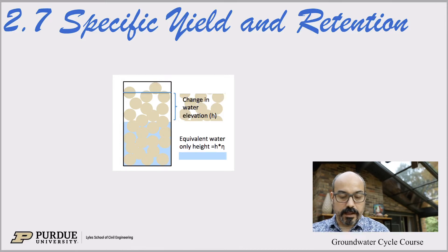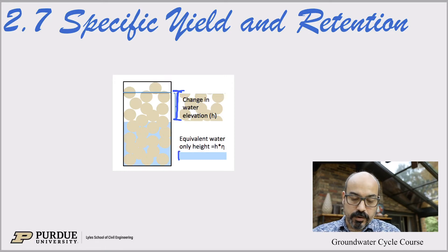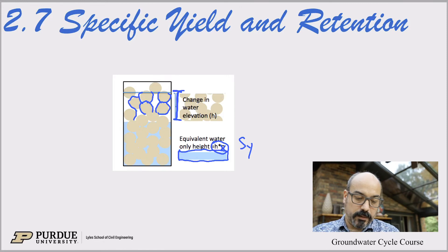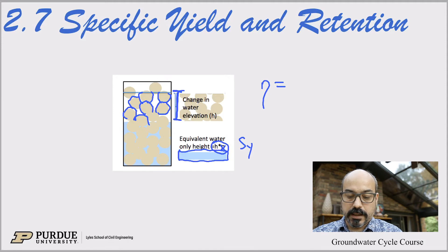If we look at the change in water elevation — say we're draining a part of the aquifer of height h — the amount of water that drains is h times the porosity. But in reality, some water actually stays behind as pellicular water or by capillarity, so the actual amount of water you get is not quite porosity times h, but rather Sy.